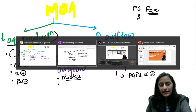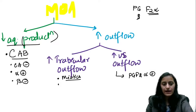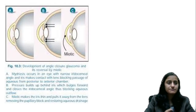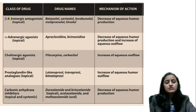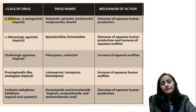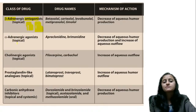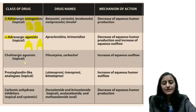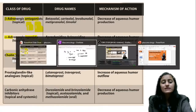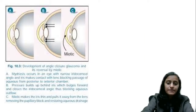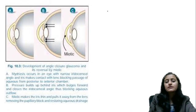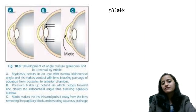Let's look at this table of mechanisms. Beta antagonists (beta blockers), alpha agonists — then we have miotics. What is the mechanism of action of miotics in glaucoma? How do miotics help? Miotics are especially useful in angle closure glaucoma.